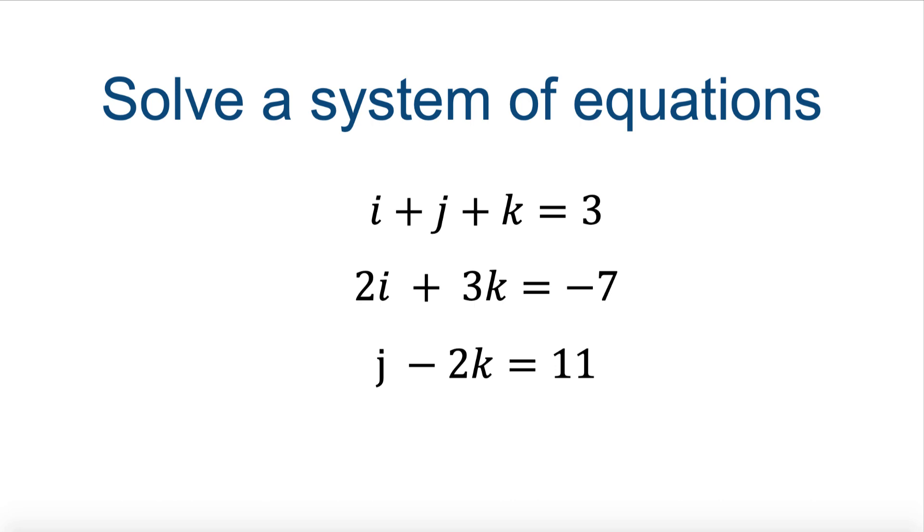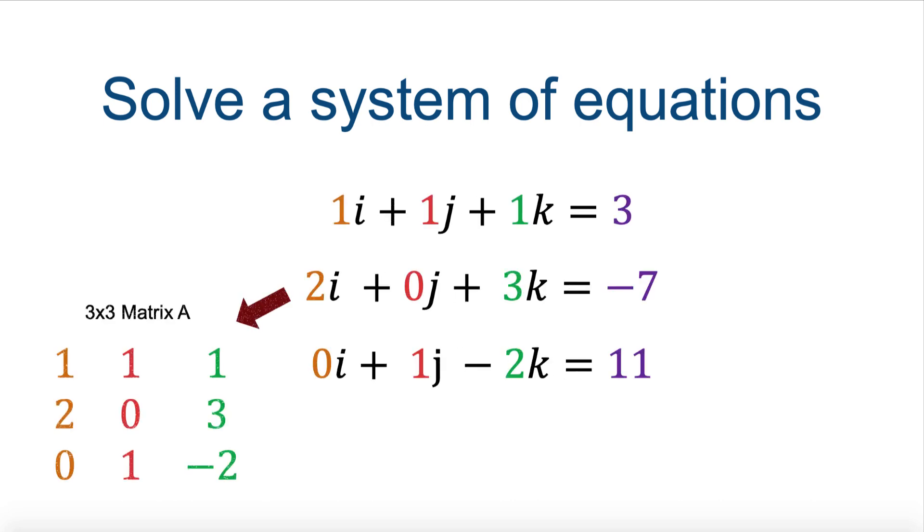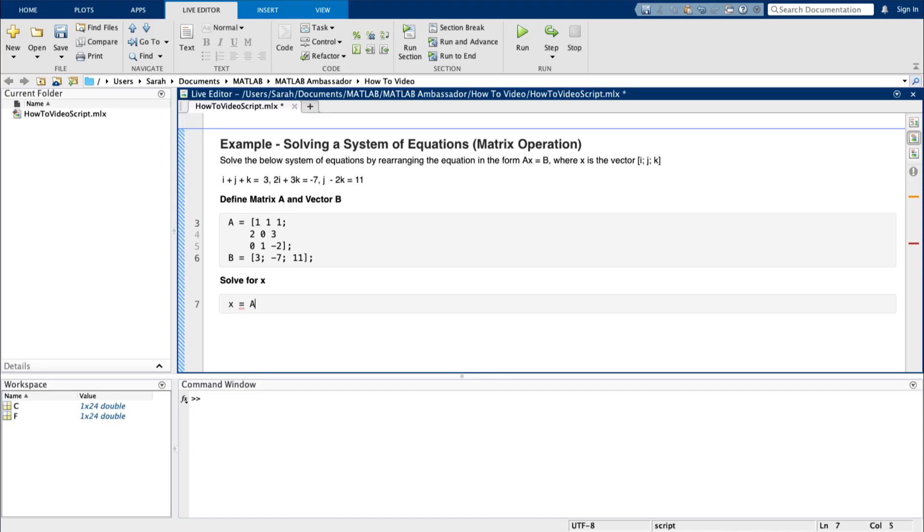While I could do this algebraically, I could also represent the equation's cofactors as a 3 by 3 matrix A, their solutions as 3 by 1 vector B, and use MATLAB's backslash operator to solve the matrix equation AX equals B for i, j, and k simultaneously.